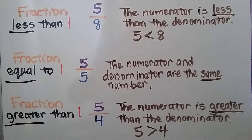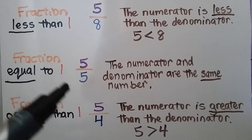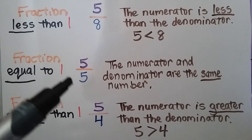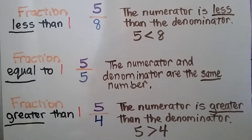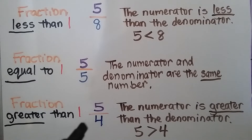For a fraction equal to one, the numerator and denominator are the same number. It's split into five parts and we have all five parts — we have one whole. For a fraction that is greater than one, the numerator is greater than the denominator. Five is greater than four, so that's a fraction greater than one.